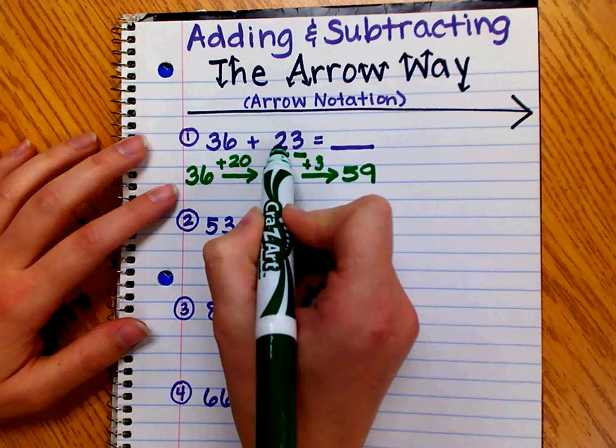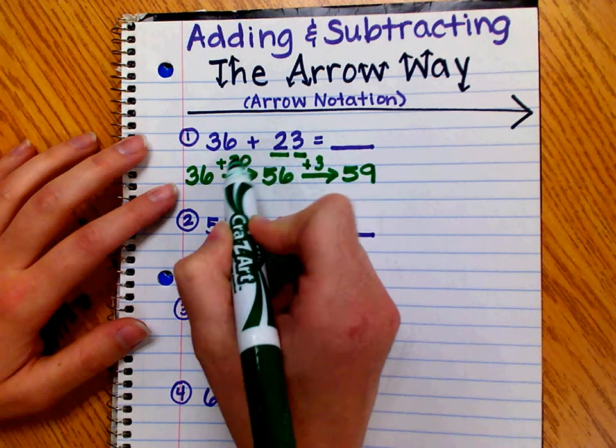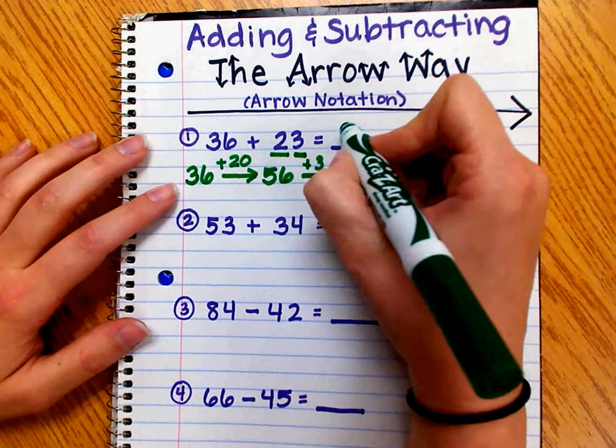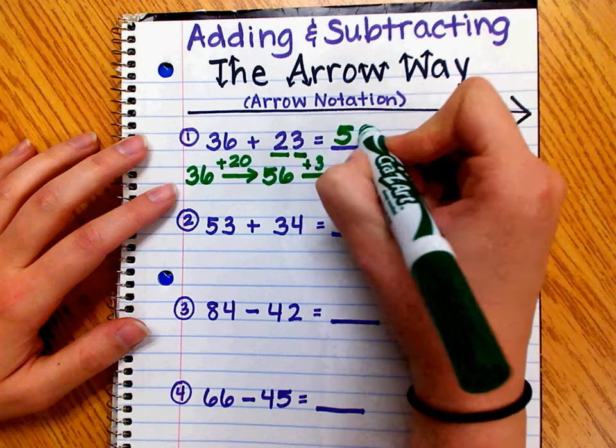First, we added the tens, the value of the tens, and then we added the value of the ones. So, 36 plus 23 is 59.